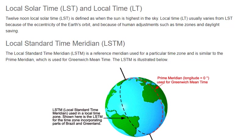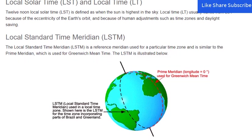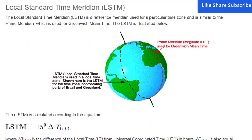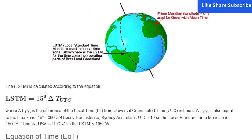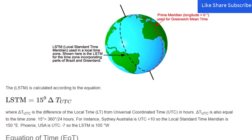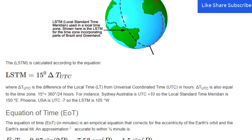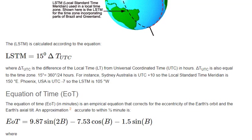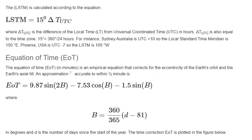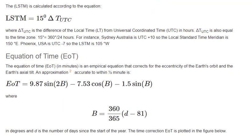The LSTM is calculated according to the equation where ΔTUTC is the difference of the local time from UTC in hours. ΔTUTC is also equal to the time zone. 15 degrees equals 360 degrees divided by 24 hours. For instance, Sydney, Australia is UTC+10, so the Local Standard Time Meridian is 150 degrees east.